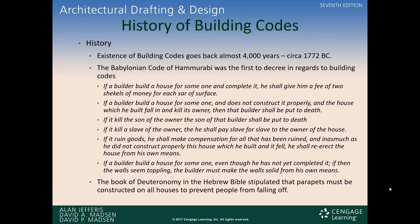Let's talk a little bit about the history of building codes. Building codes have been around for a really long time. The existing building codes go back 4,000 years — circa 1772 BC, the Babylonian Code of Hammurabi was the first to decree building codes. They had some pretty strict codes. I'm really glad that we don't enforce codes the way they did back then.